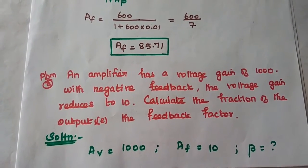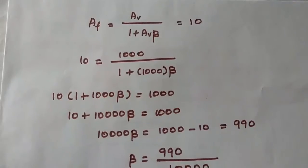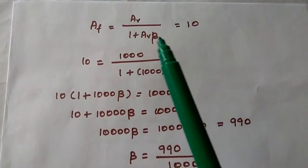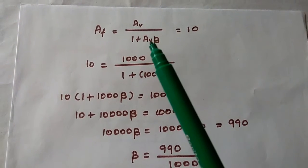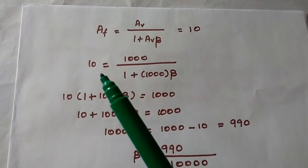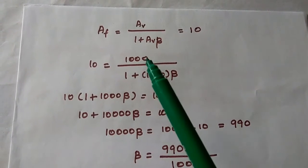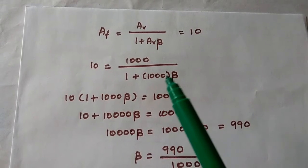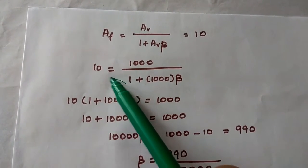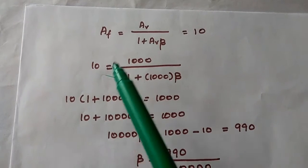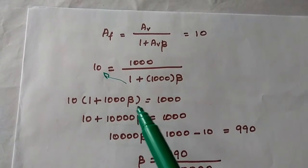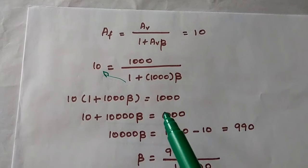Using the formula AF = AV / (1 + AV·β), substituting the known values: 10 = 1000 / (1 + 1000·β). Cross-multiplying gives 10 × (1 + 1000·β) = 1000.